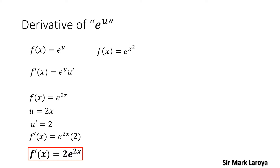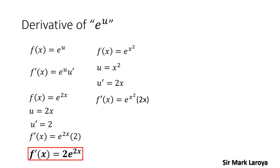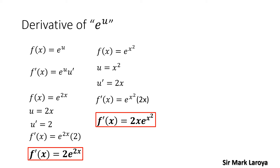The next example is f(x) = e raised to x squared. So our u, the exponent of e, is x squared. Getting the derivative of u, our u prime will be 2x. We have our u and u prime so we simply apply the formula for the derivative of f(x) = e raised to u. So f'(x) = e raised to x squared times u prime 2x, which we rewrite as f'(x) = 2x times e raised to x squared.